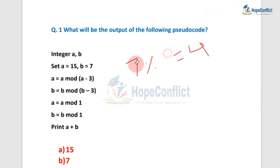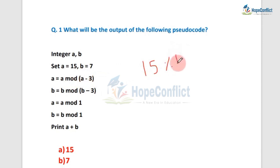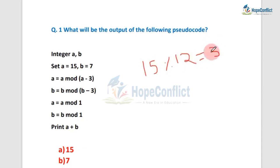So similarly here, a equals a mod (a minus 3). Value of a is 15, so 15 mod (15 minus 3) equals 15 mod 12. When we divide 15 by 12, the remainder will be 3. So the new value of a equals 3.